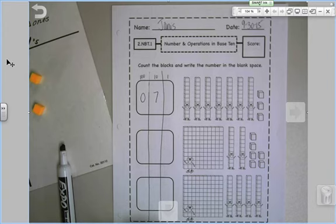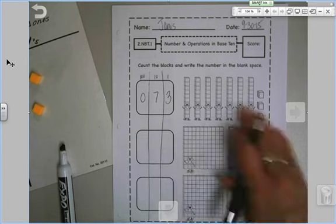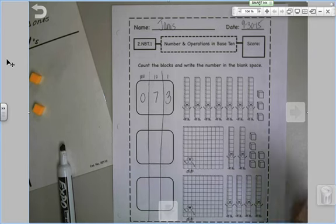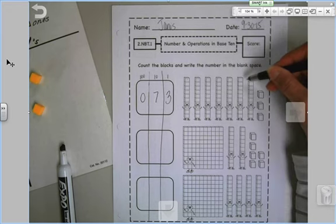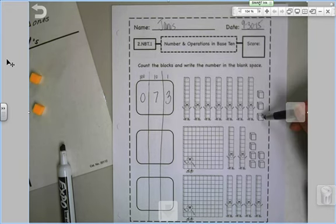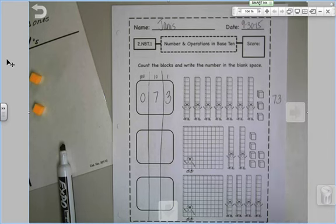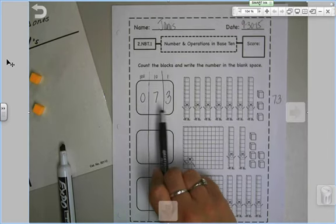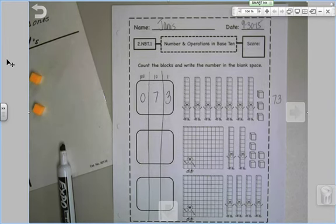How many ones did you say? Good, you should have said three. What number does this make up? Well if we count 10, 20, 30, 40, 50, 60, 70, 71, 72, 73, we're going to write the number 73 on the side. Take a look at your placemat, it makes the number 73.